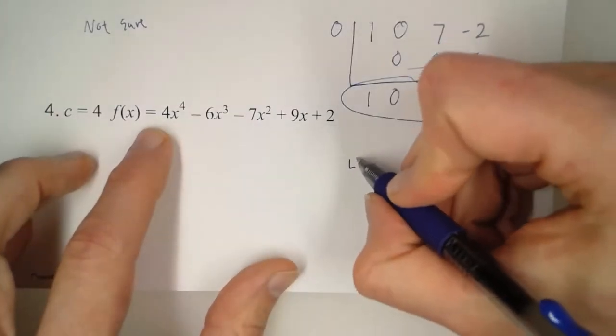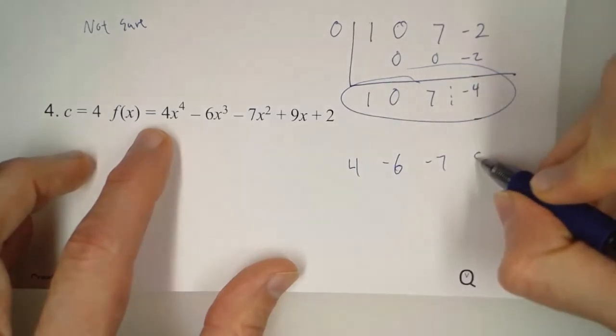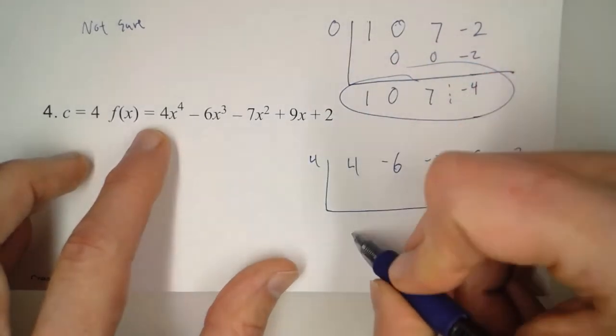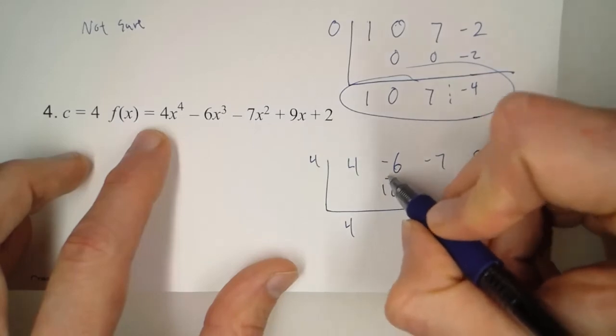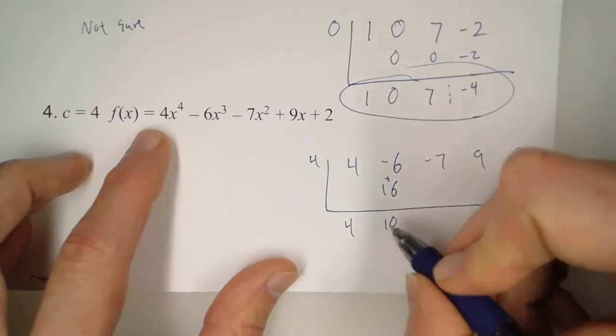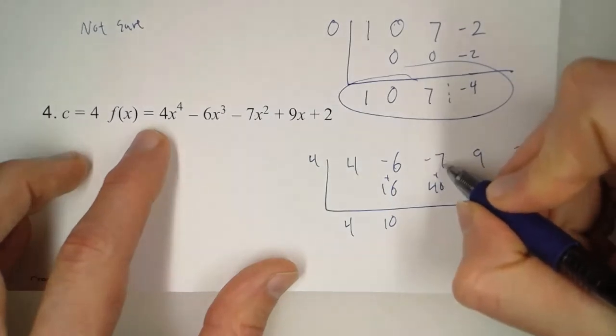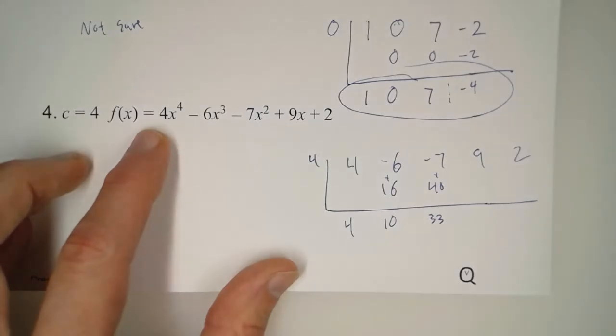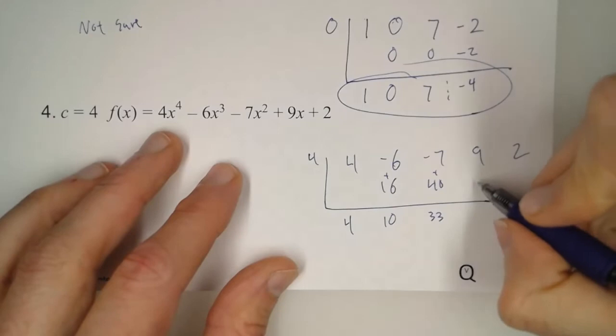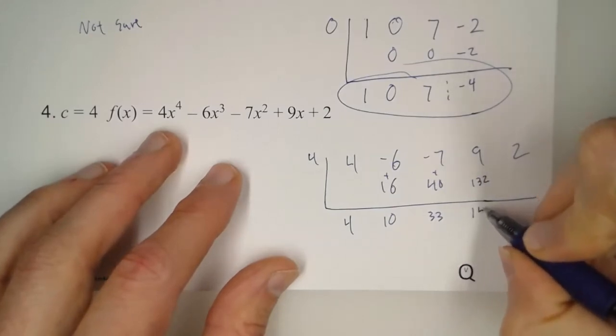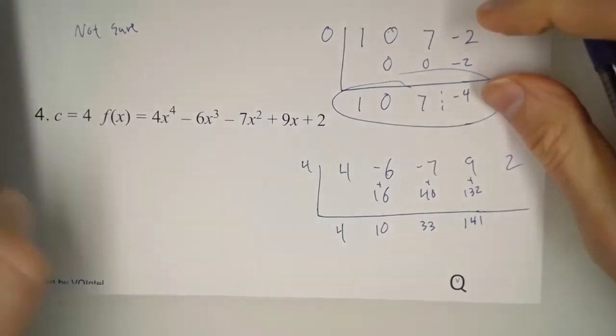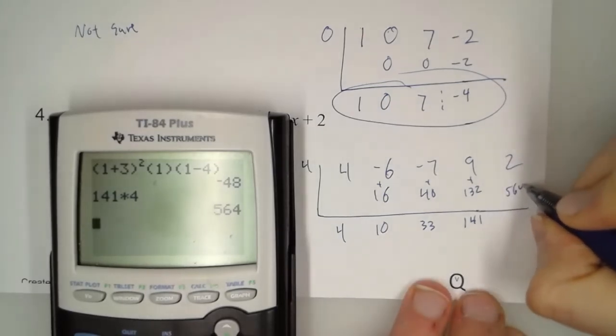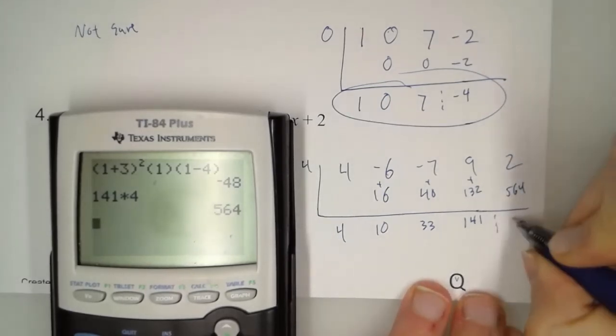Then finally, for the last one, we have 4, negative 6, negative 7, 9, and 2. Then we're plugging in 4. So 4 times 4 is 16. We get 10, times 4 is 40. Negative 7 and 40 is 33. 33 times 4, that's 132. So that's 141. And we add them. The numbers are getting pretty big here. So that's 141 times 4 is 564. And so that's 566.